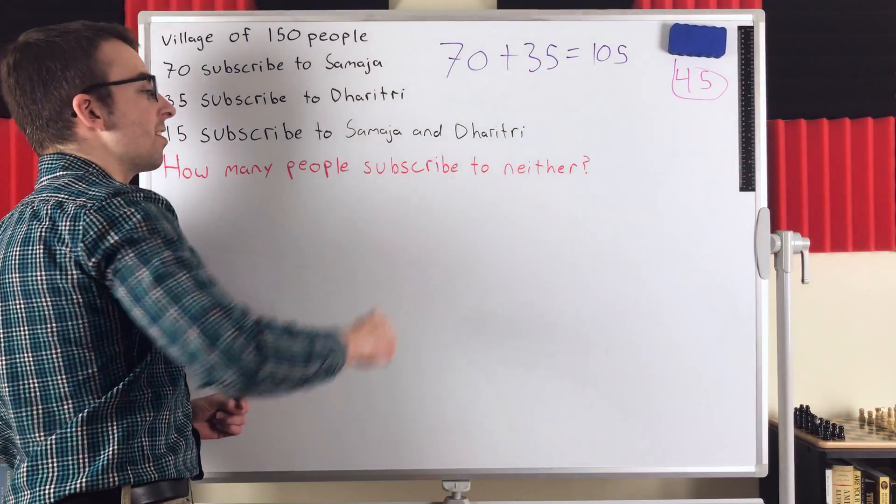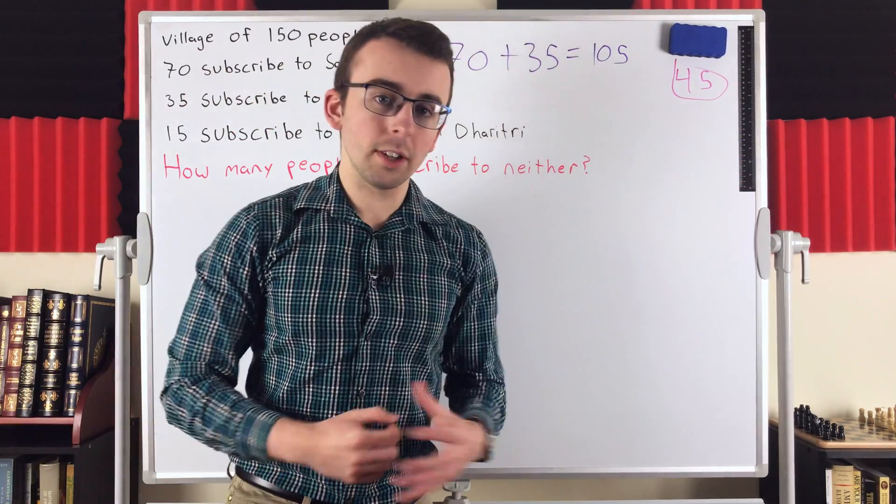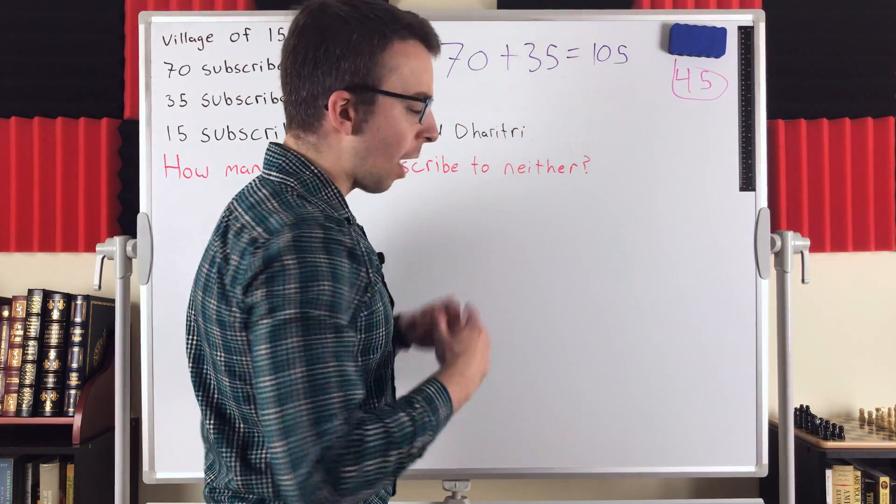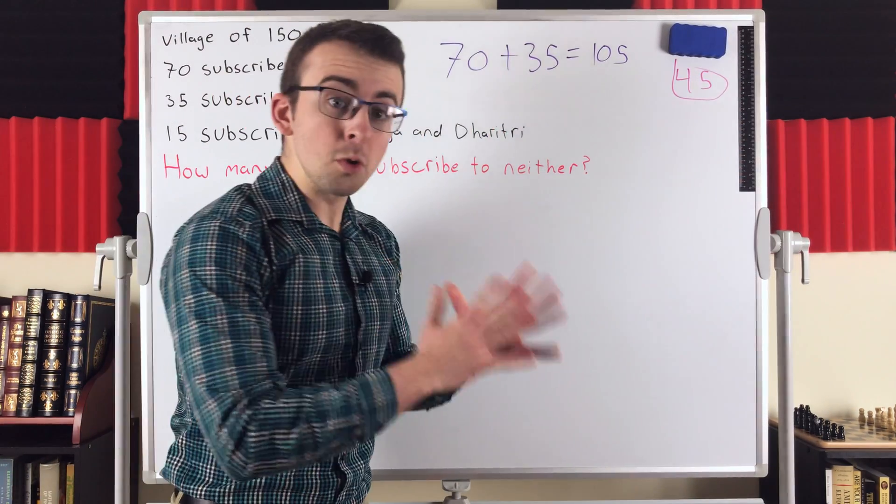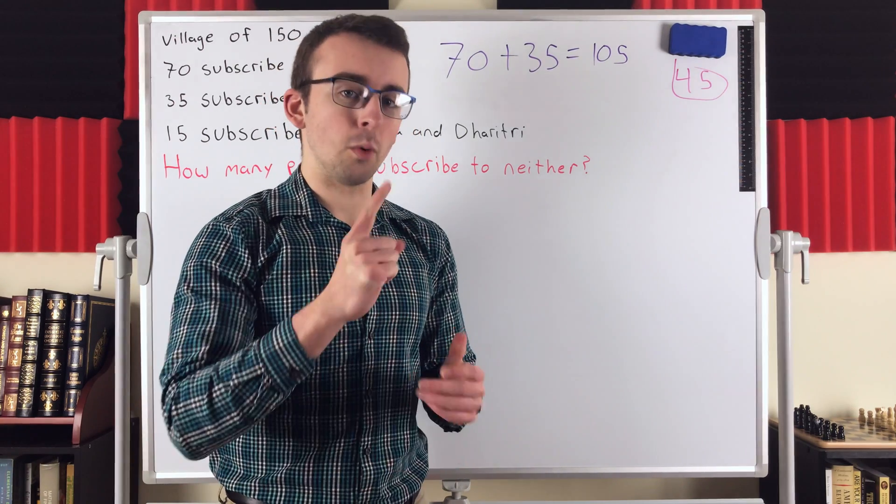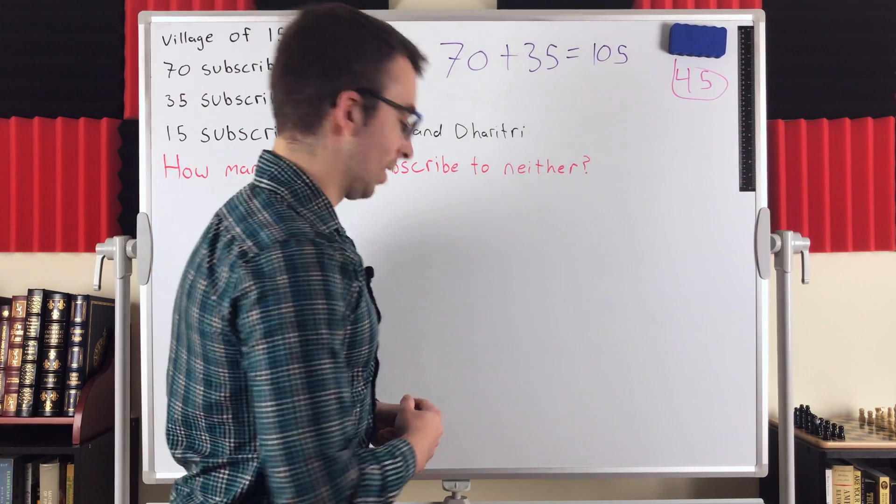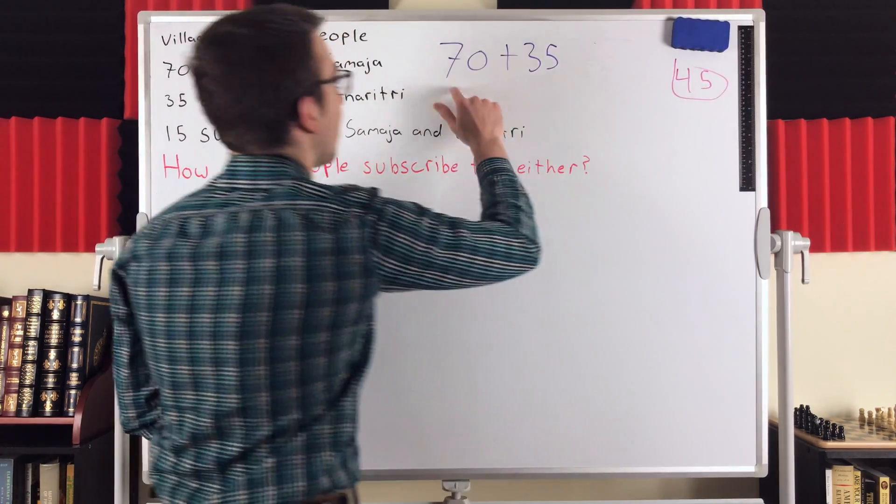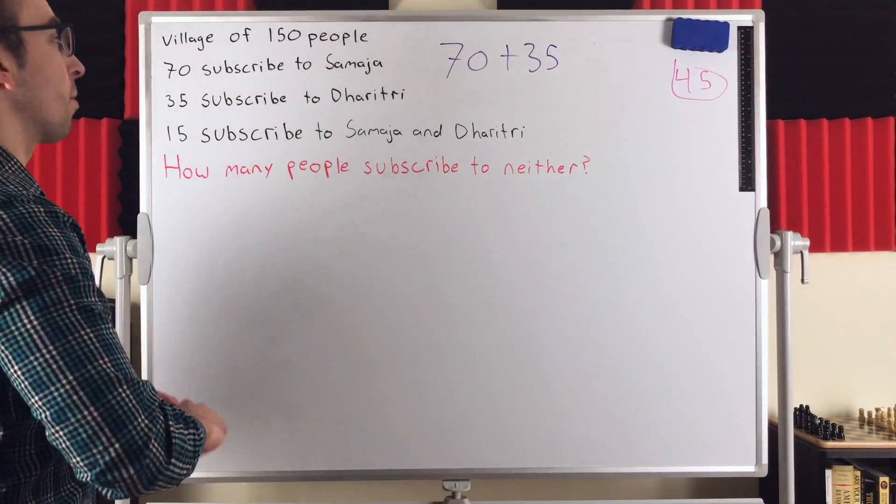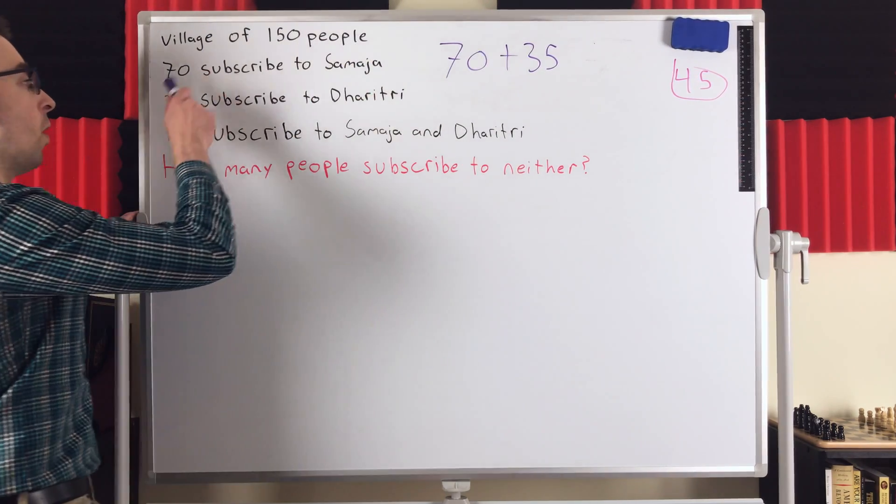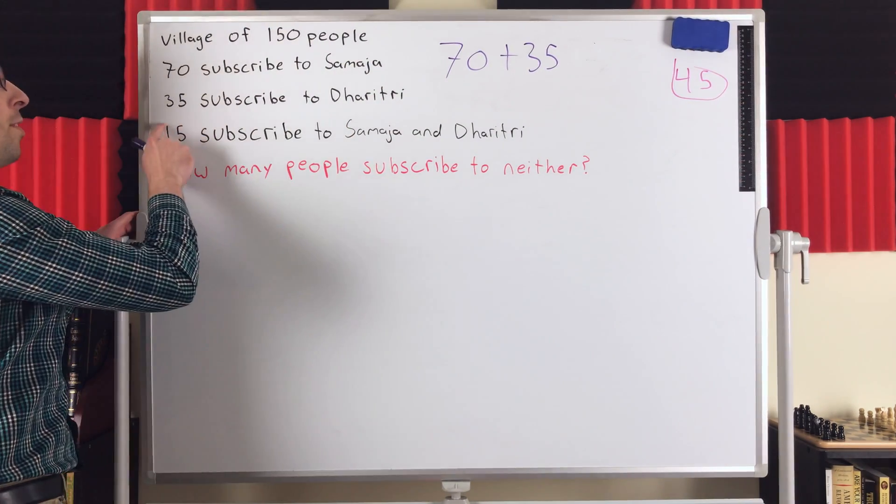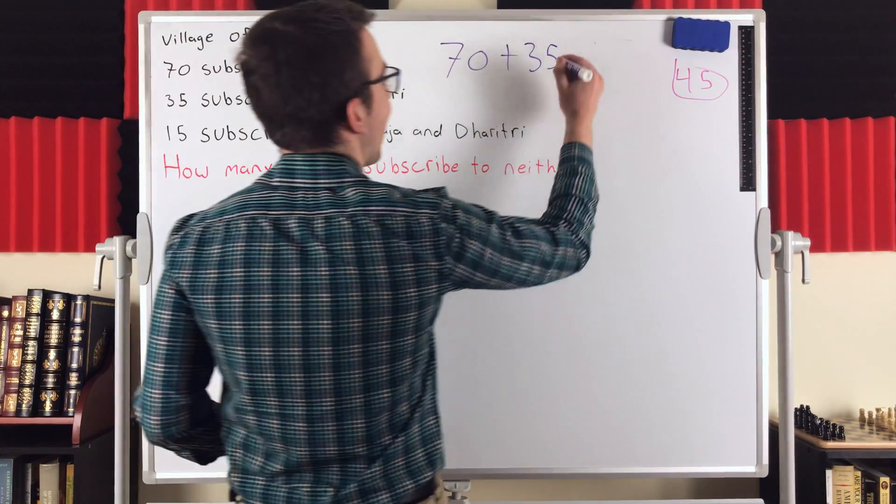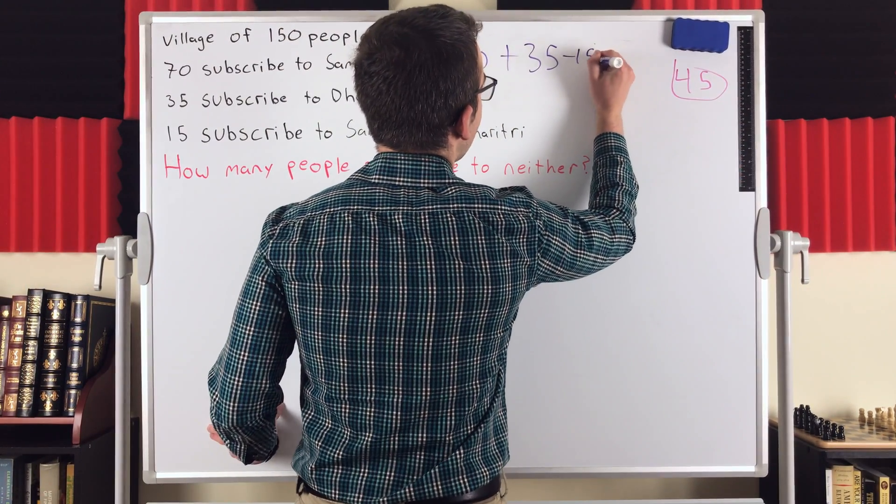This is a specific example of what's called the inclusion exclusion principle. We've included these people twice. So to correct our count, to correct our answer, we've got to subtract them from our count. How many times should we subtract them? Well, we do want to count them, but we've counted them twice. So we want to subtract them just once. So if we do a little bit of erasing here, 70 plus 35, that's the number of people who are subscribed to the Samajah or subscribed to Dhritri, but with this 15 counted an extra time.